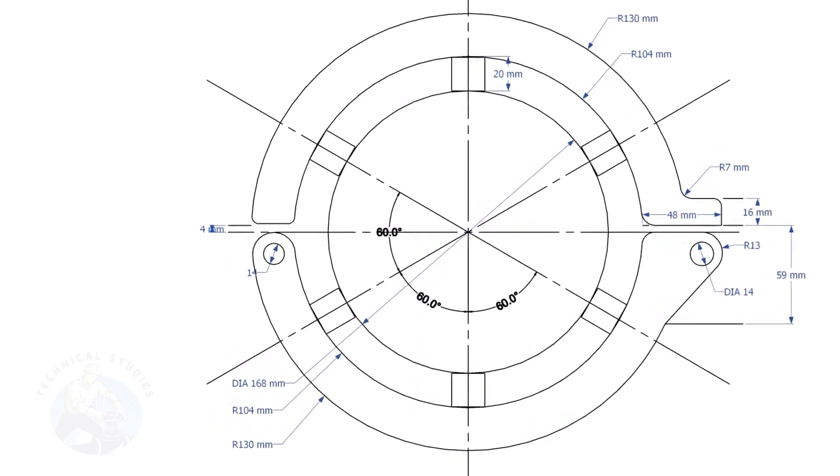This layout is for a 6-inch diameter pipe clamp. Draw the center lines and draw a circle of diameter 168mm, that is the OD of the 6-inch pipe.